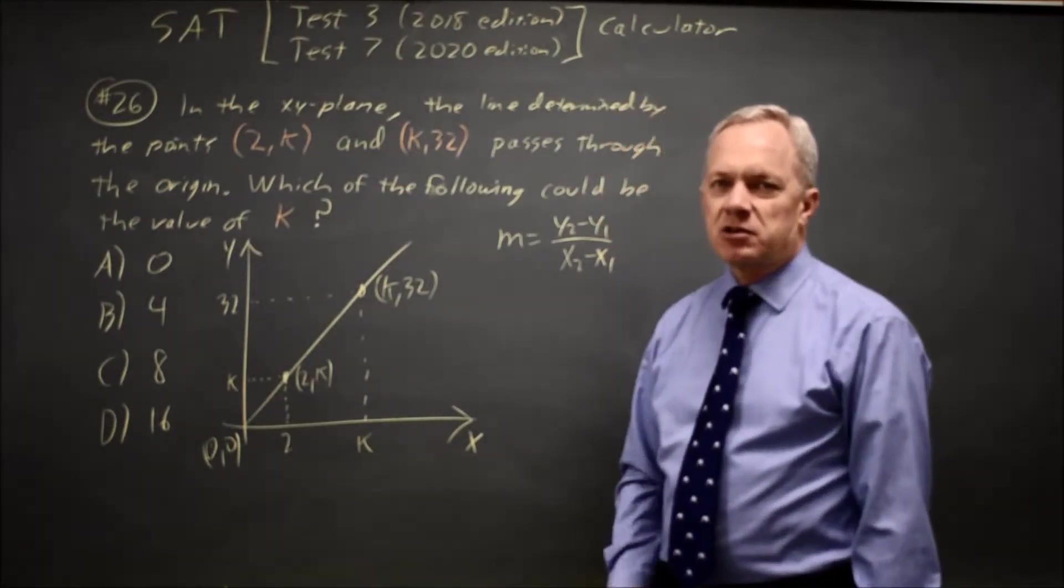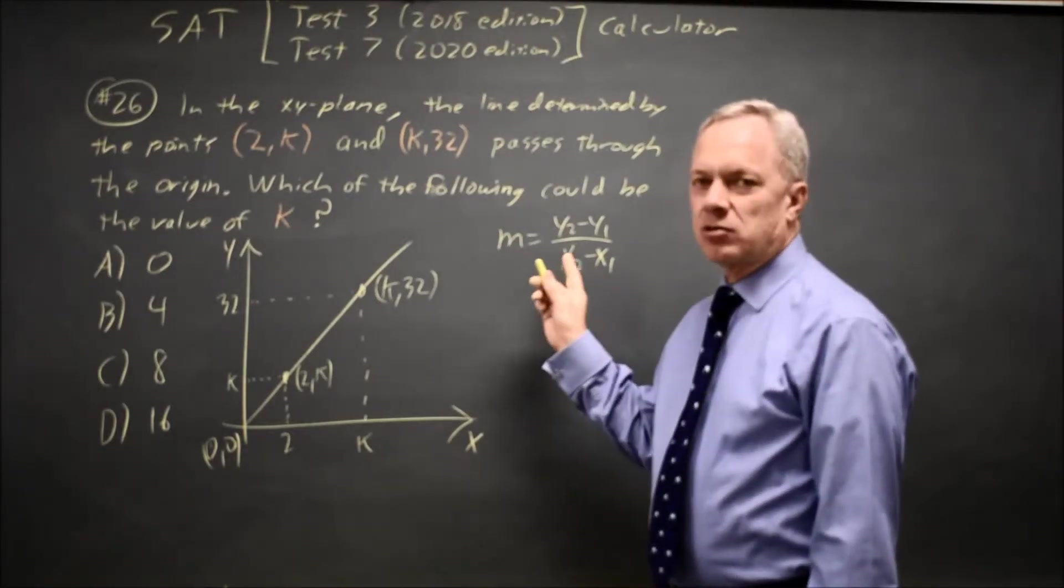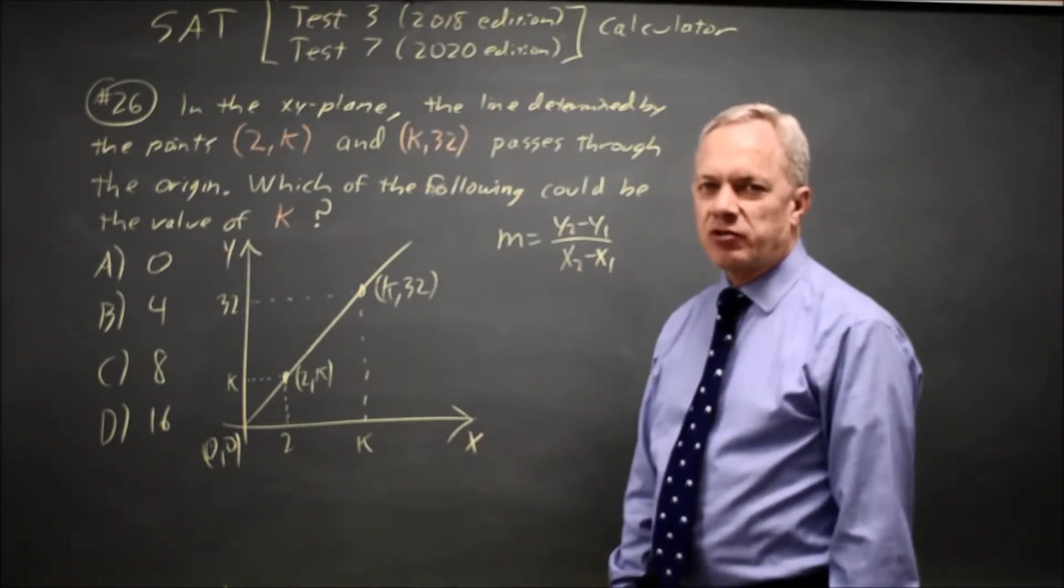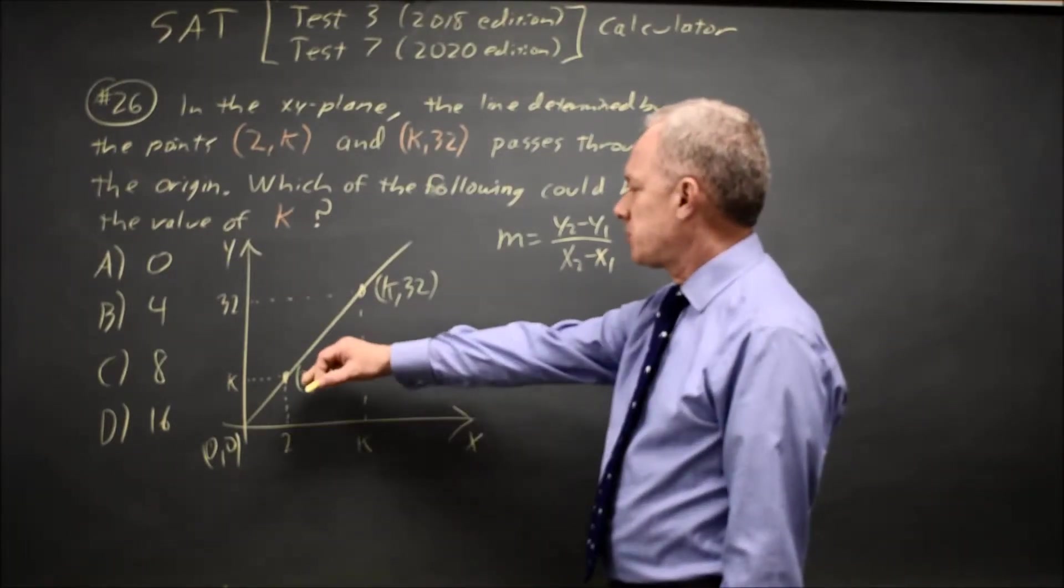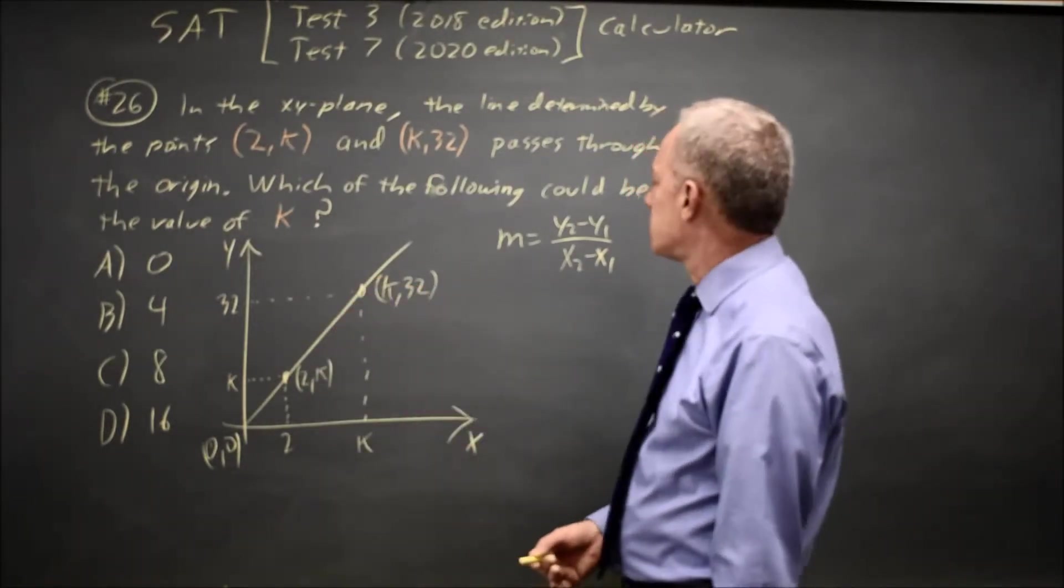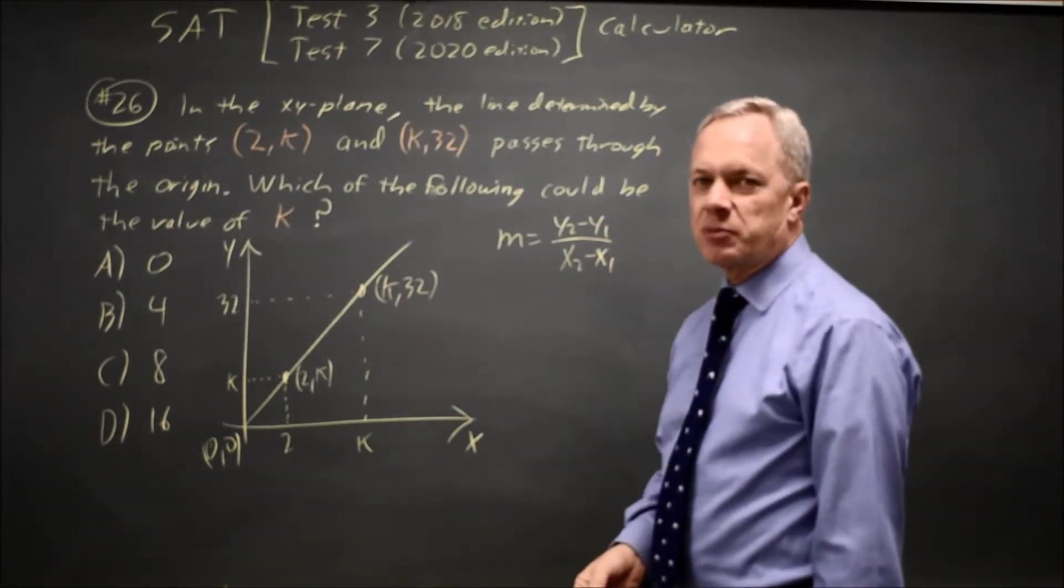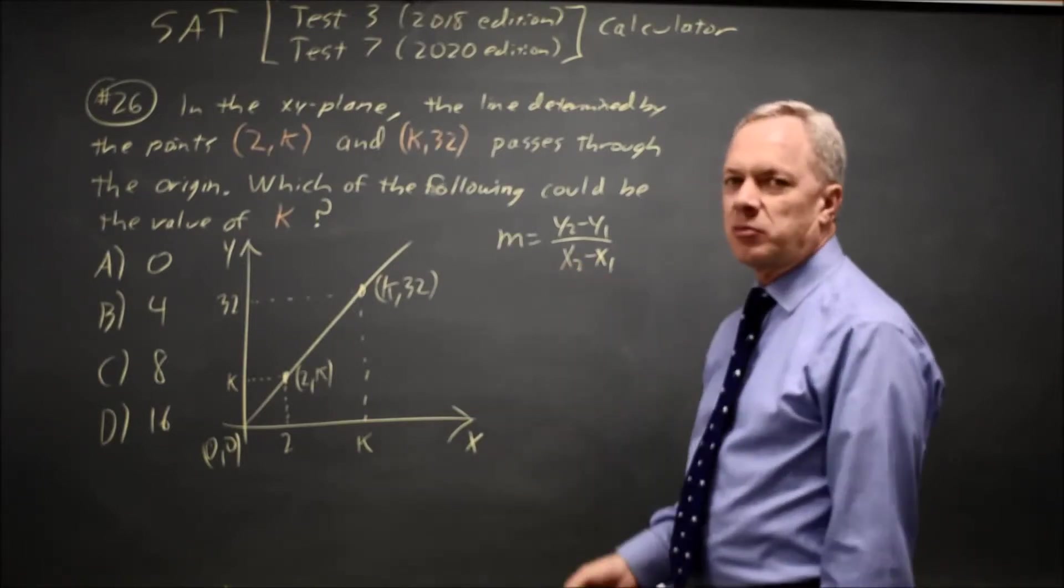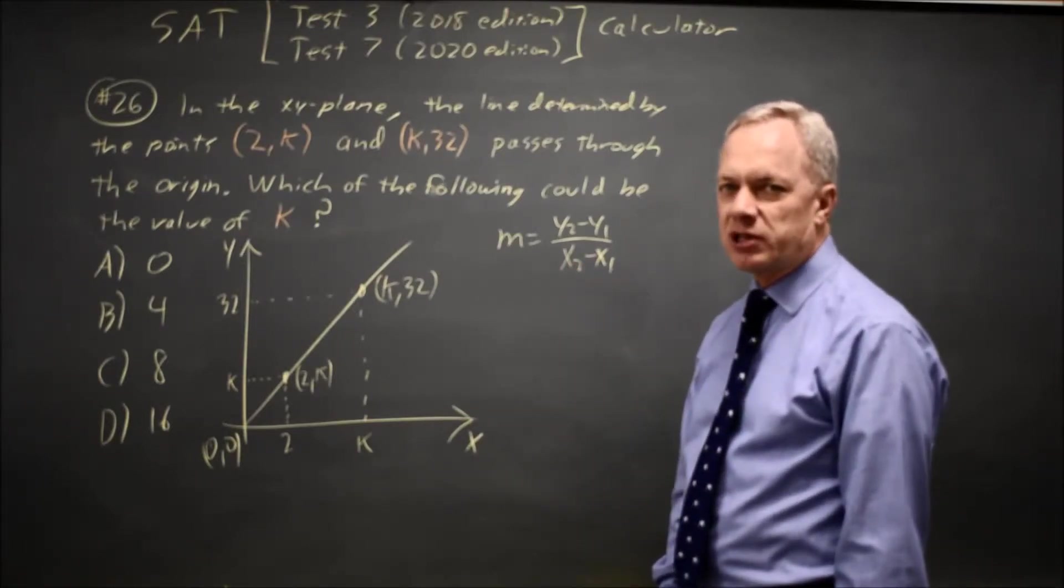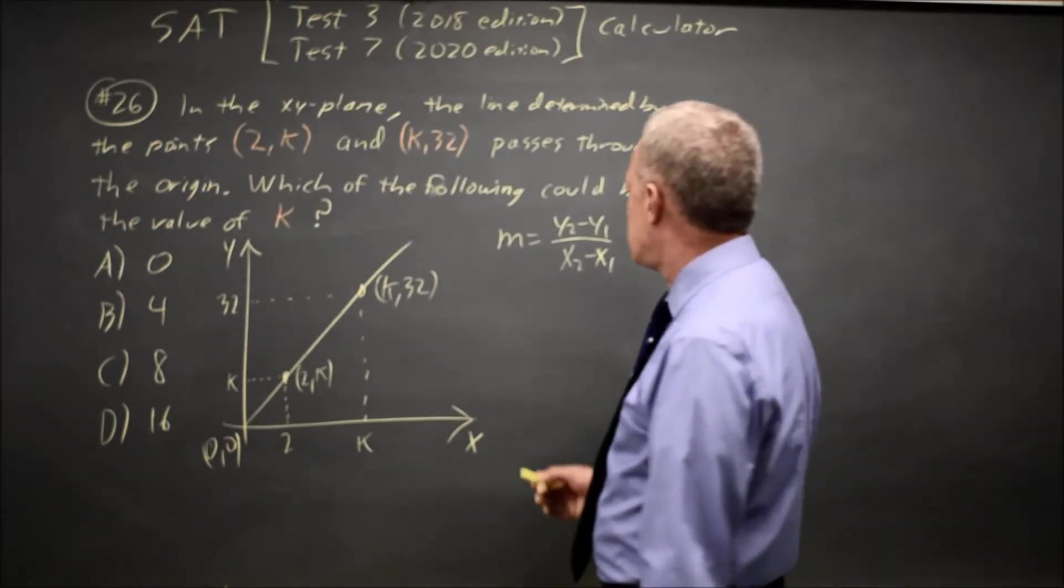The most common errors on slope are flipping the order of the x's or the y's but not both. And if you flip the order of only one of them, that flips the sign in your slope. So make sure the slope comes out, in this case positive, but the sign that you expect. The other error is flipping the entire fraction. Some people inadvertently put x on top. Remember your slope is rise over run. That's change in y over the change in x. The y is always the numerator for slope.